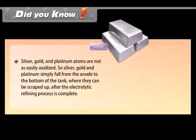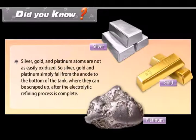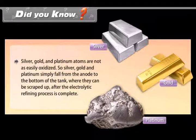Did you know? Silver, gold and platinum atoms are not easily oxidized. So, silver, gold and platinum simply fall from the anode to the bottom of the tank where they can be scrapped up after the electrolytic refining process is complete.